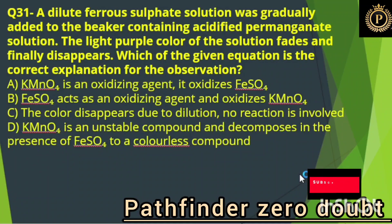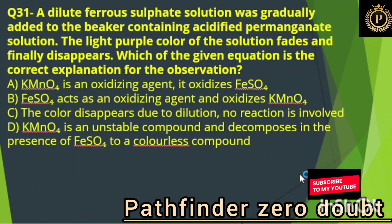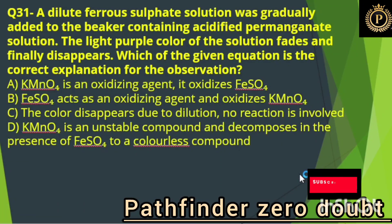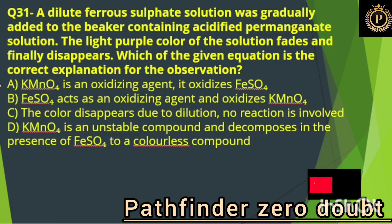A dilute ferrous sulfate solution was gradually added to a beaker containing acidified permanganate solution. The light purple color of the solution fades and finally disappears. Which of the given equations is the correct explanation for this observation? Option A, KMnO4 is an oxidizing agent — it oxidizes FeSO4.